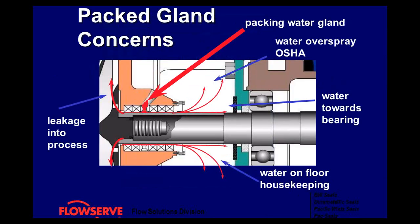Some of the problems: leakage into your process can cause contamination, especially if you don't want water in your system. Also, if you have overspray or water on the floor, this can be an OSHA concern and a housekeeping concern. Lastly, if water gets towards the bearings, it can contaminate the oil and eventually lead to a bearing failure.